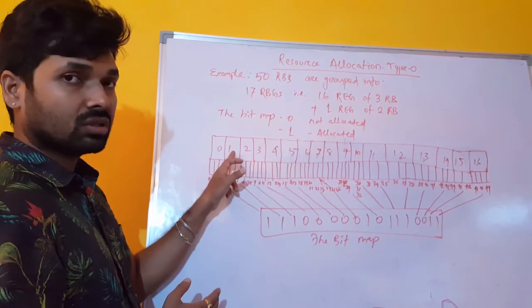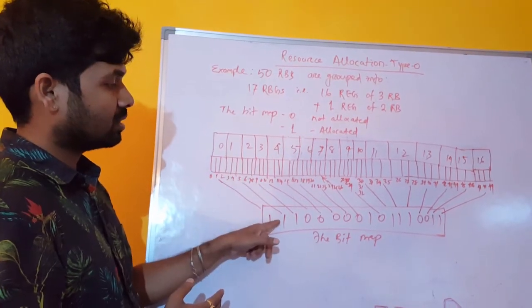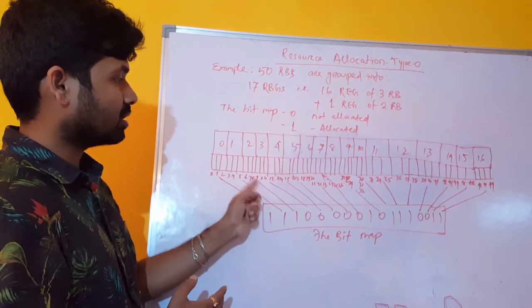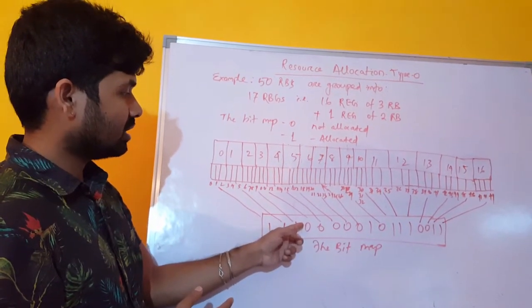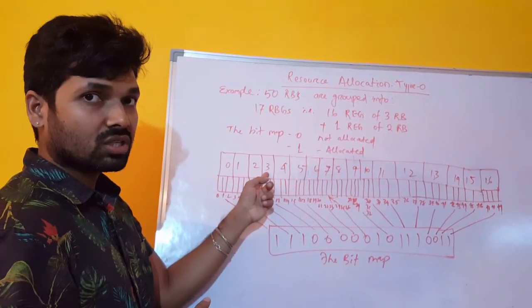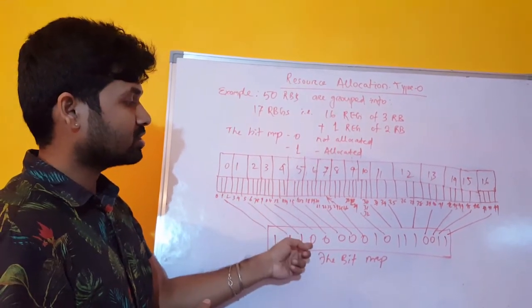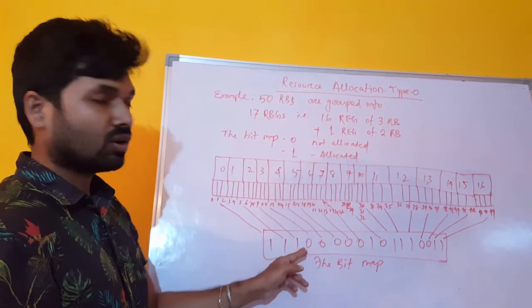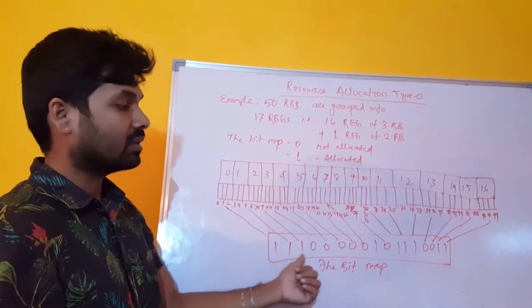Again for group 1, it is resource element group 1 or the second group 1. That means it is allocated. Wherever it is 0, let's say it is 0 for the 4th group. That means resource element group 3. It is showing 0. That means these resources are not allocated. These 0 are not allocated, 1 is allocated.